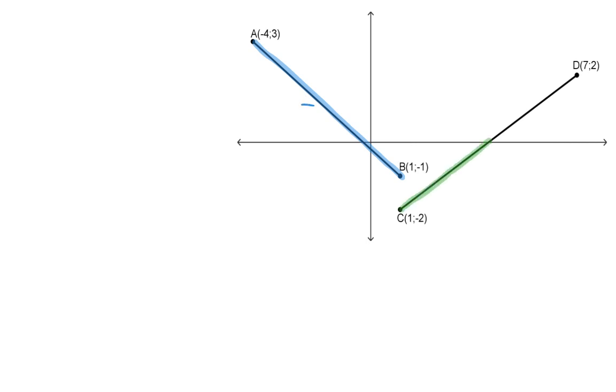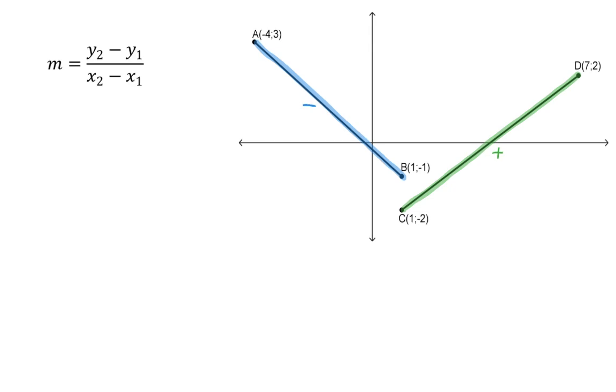While CD is moving up from left to right, increasing, giving it a positive gradient. So now let's make use of the formula for gradient to determine the gradient of line segment AB.